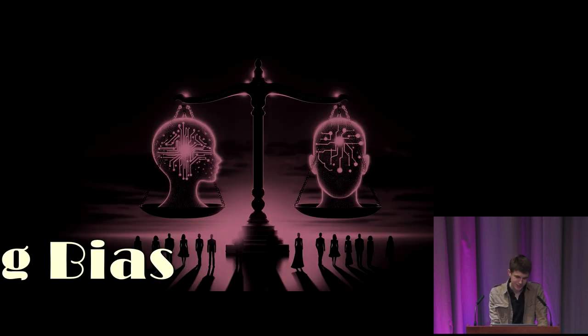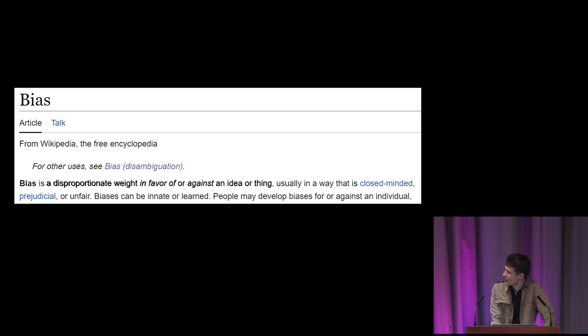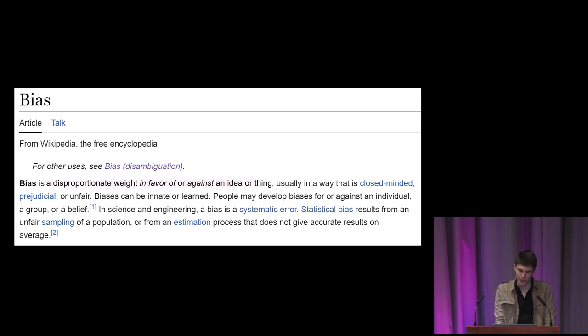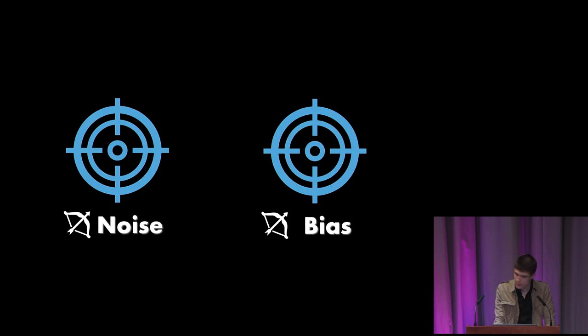So defining bias. Bias is quite a fuzzy term. I pulled up Wikipedia here, as all talks should do. What we have is bias is a disproportionate weight in favour of or against an ideal or thing. It's actually quite hard to think of what you couldn't label as this. Surely everything is a disproportionate weight depending on who you're asking. But since we're already in the realm of quantifying decision making, instead we're going to use this definition: Bias is a systematic error. In the context of measurement, bias and noise are well defined. Noise is random deviation, and bias is predictable deviation, predictable inaccuracy.